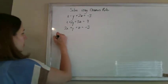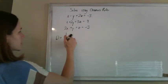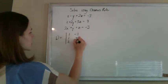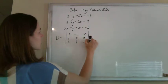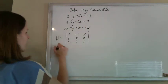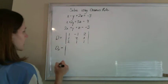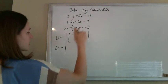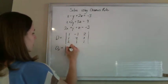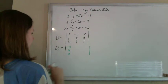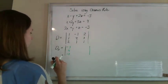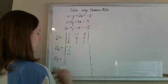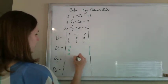For Cramer's Rule, we're going to create a bunch of determinants. The first determinant is just going to have all the coefficients of our original system. Then I'm going to create a dx determinant, where I take the x column and replace it with the answer column. Then my dy, I'll take the y column and replace it with the answers, and for my dz, I'll replace it with the answers.